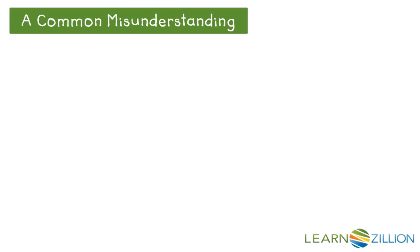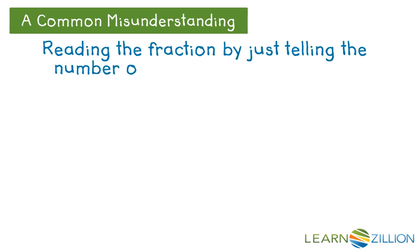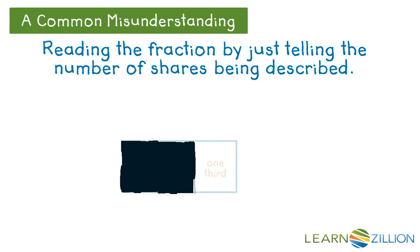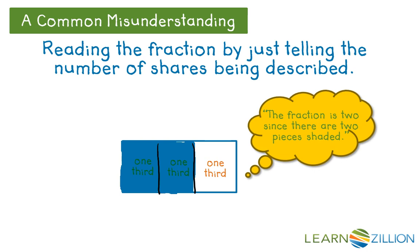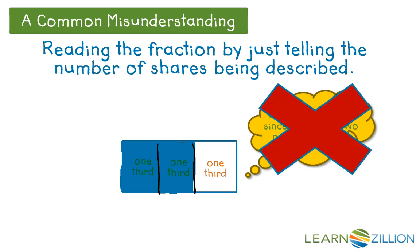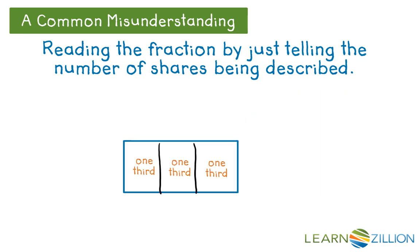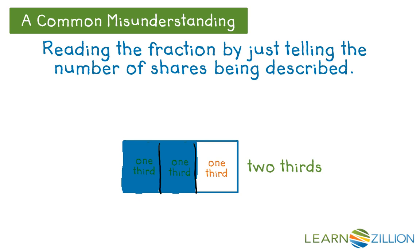Now a mistake that is sometimes made is reading the fraction by just telling the number of shares being described. For example, here you can see a rectangle partitioned into thirds. You cannot say the fraction is two, since there are two pieces shaded, because two does not describe what you are saying there are two of. The word 'third' signals a fraction and lets everyone know we are looking at a part of a whole. So we have the whole partitioned into three equal parts, each unit fraction being one-third. We have one-third, two-thirds shaded. So we would describe this rectangle as two-thirds of our whole are shaded.